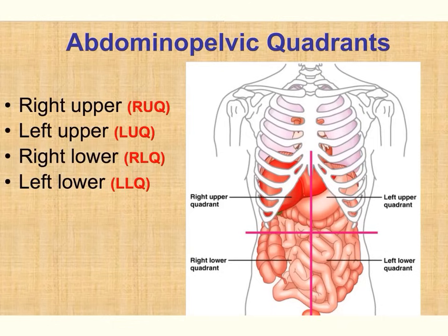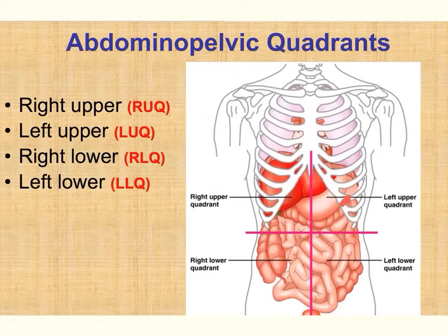The abdominal pelvic cavity can be subdivided into the abdominal cavity — containing the stomach, spleen, liver, intestines, and other organs — and the pelvic cavity, which contains the urinary bladder, the rectum, and some reproductive organs. Because the abdominal pelvic region is so large, it is further separated into regions and quadrants. The belly button marks where the two lines meet, giving us the right upper quadrant, left upper quadrant, right lower quadrant, and left lower quadrant. By knowing which organs are in each quadrant, tenderness in a specific quadrant can suggest which organs may be affected.